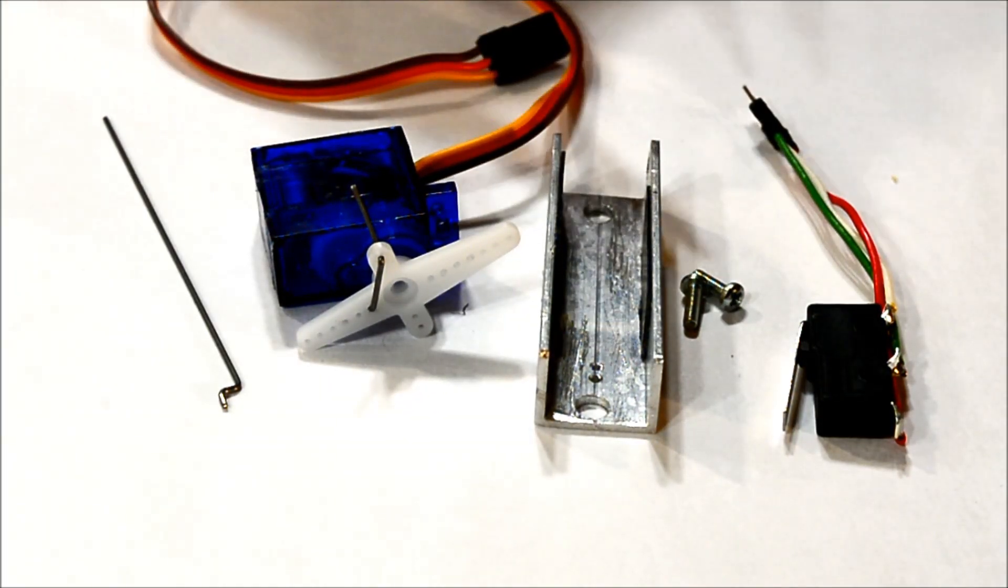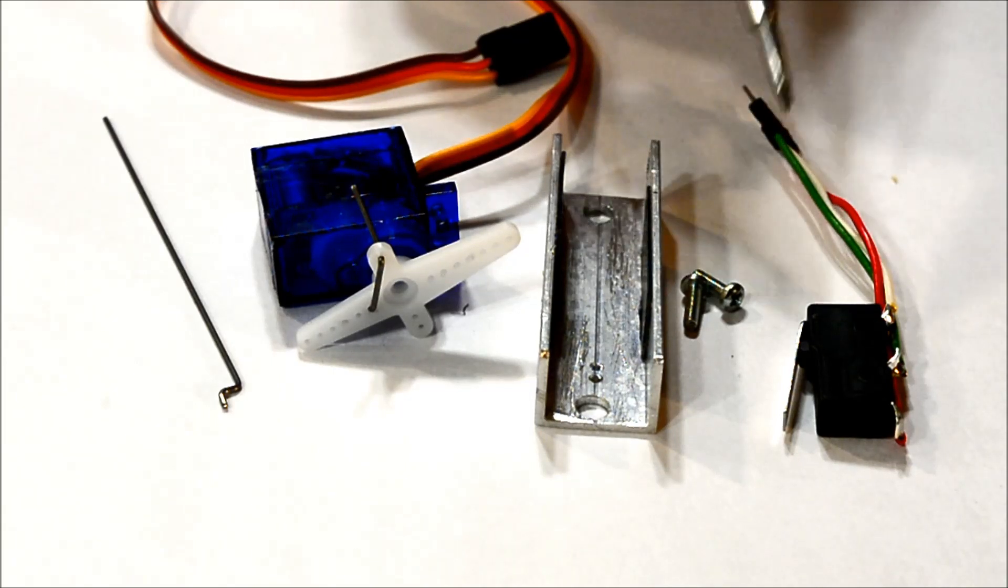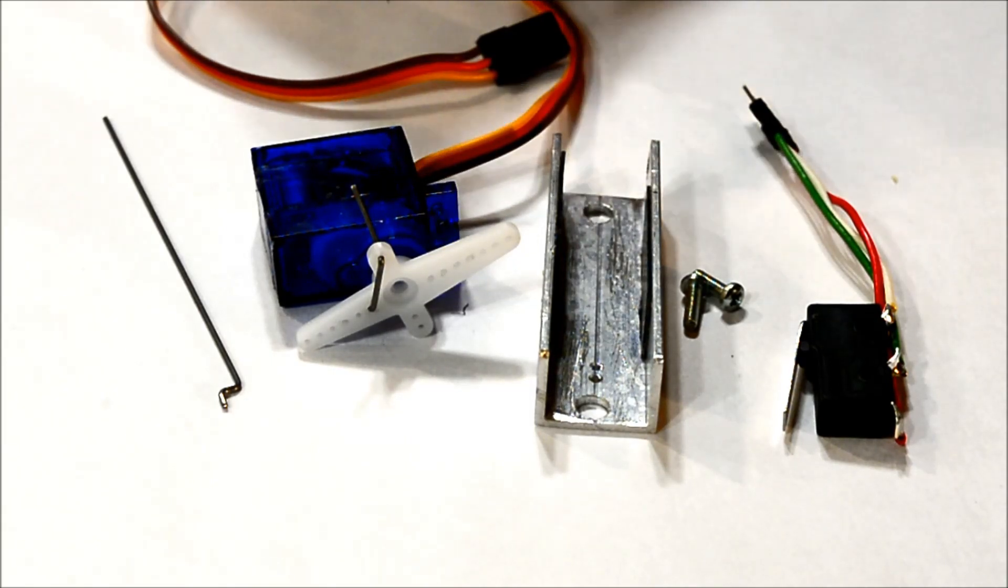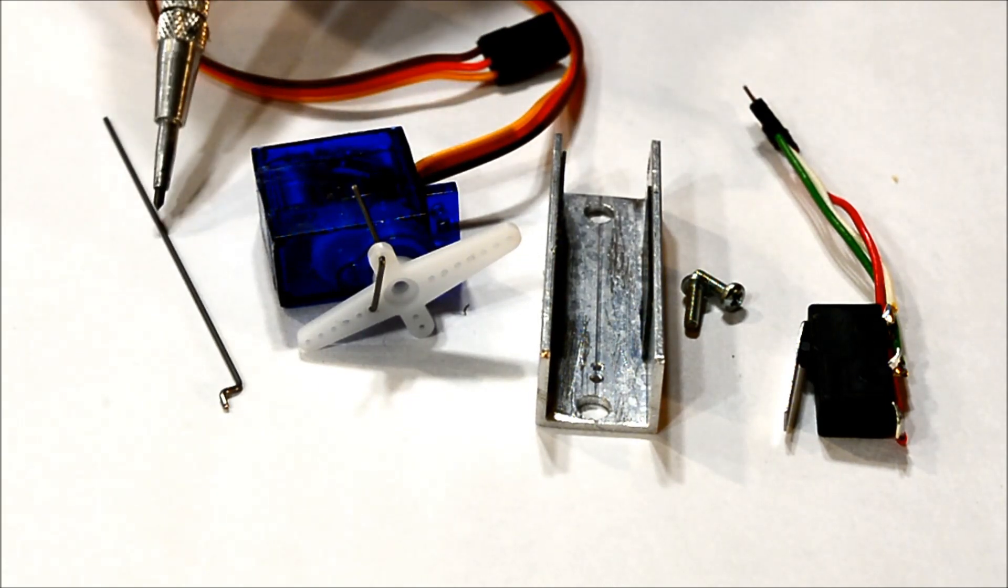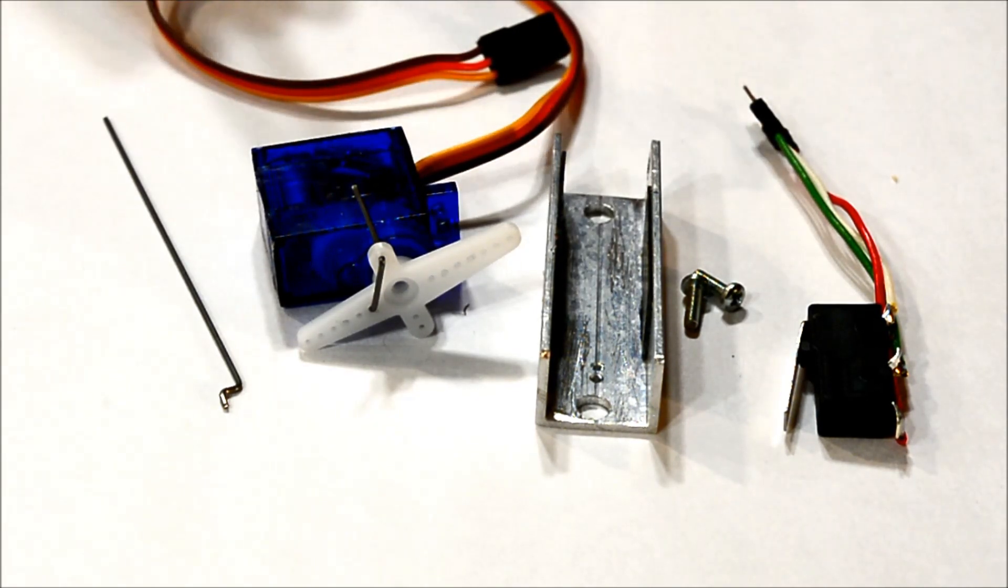And what's really nice about this system that I like is it's completely modular. You can replace the microswitch if anything happens by just taking out a couple of screws. The servo is simply a press fit, it's not glued in. The actuator just hooks into the arm and then goes up through. Everything comes apart really easily and you can update it anytime something goes wrong.